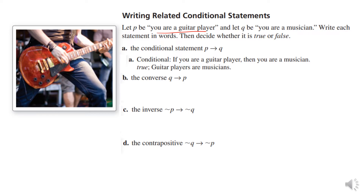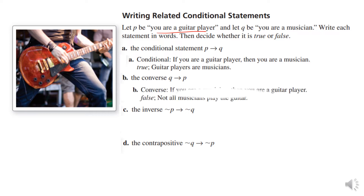Now for the converse, we switch it: if you are a musician, then you are a guitar player. Well, what if I'm a cello player, or a piano player, or a bongo player? So that is not necessarily true — that would be false.